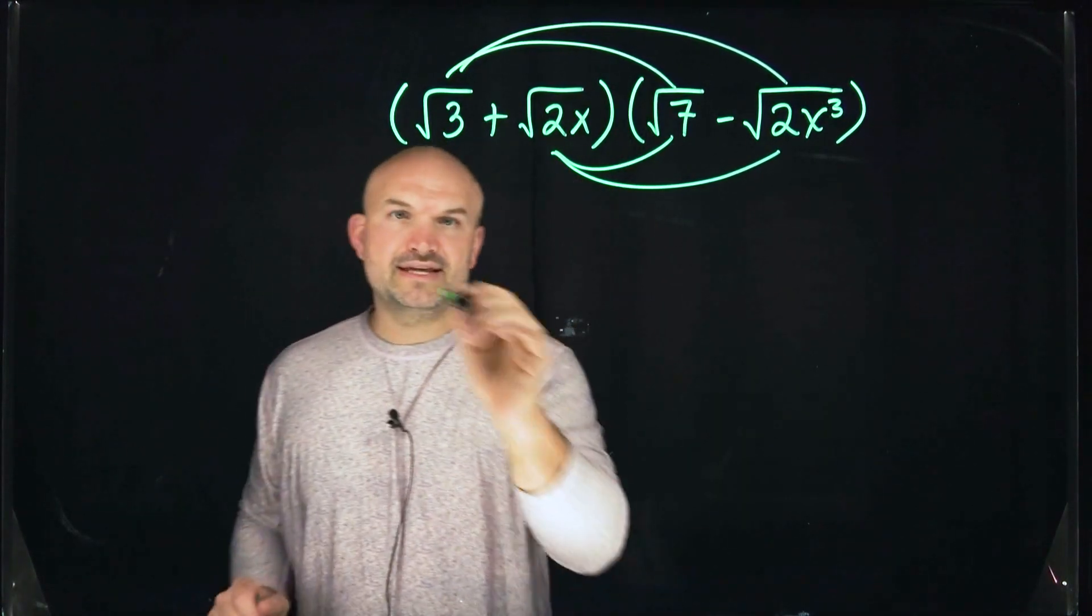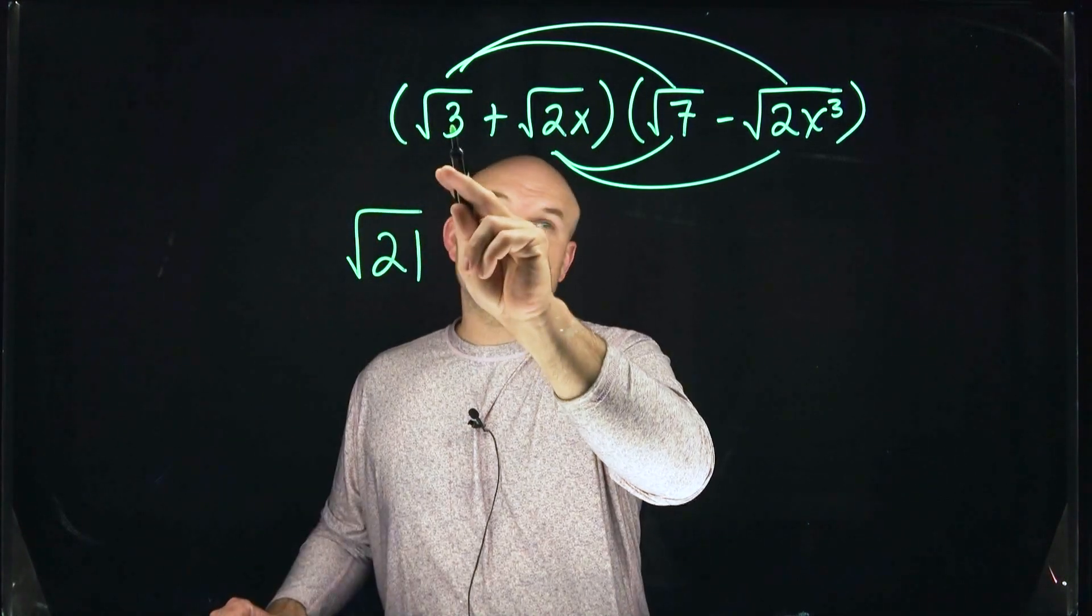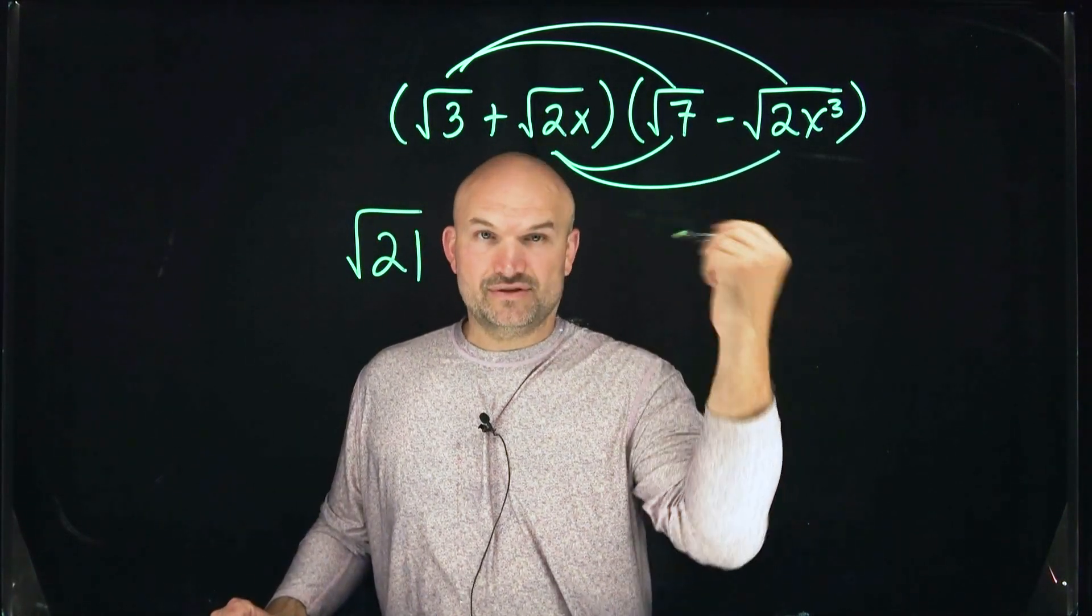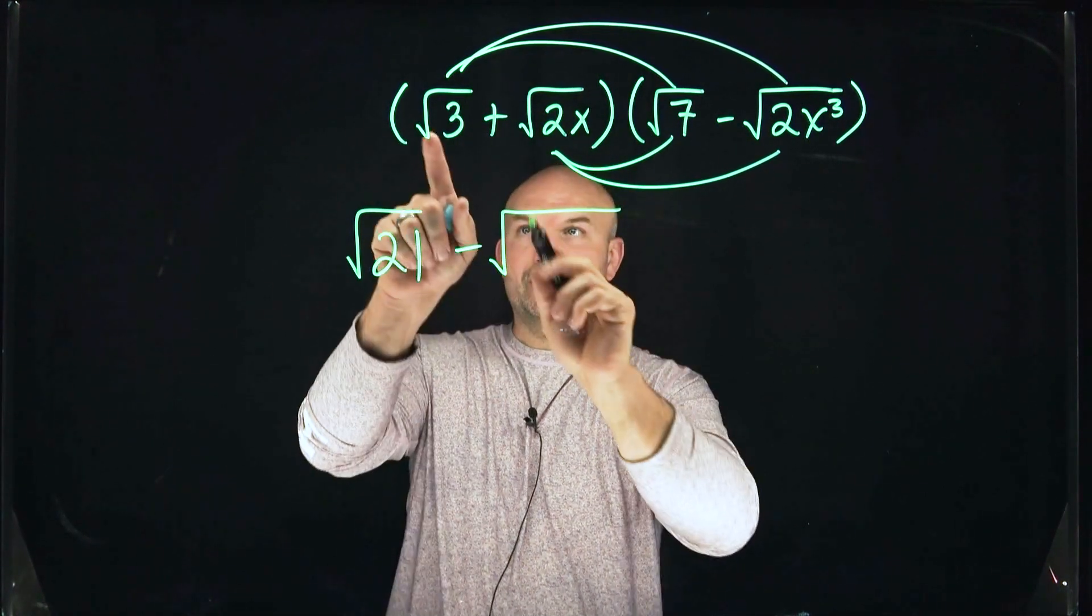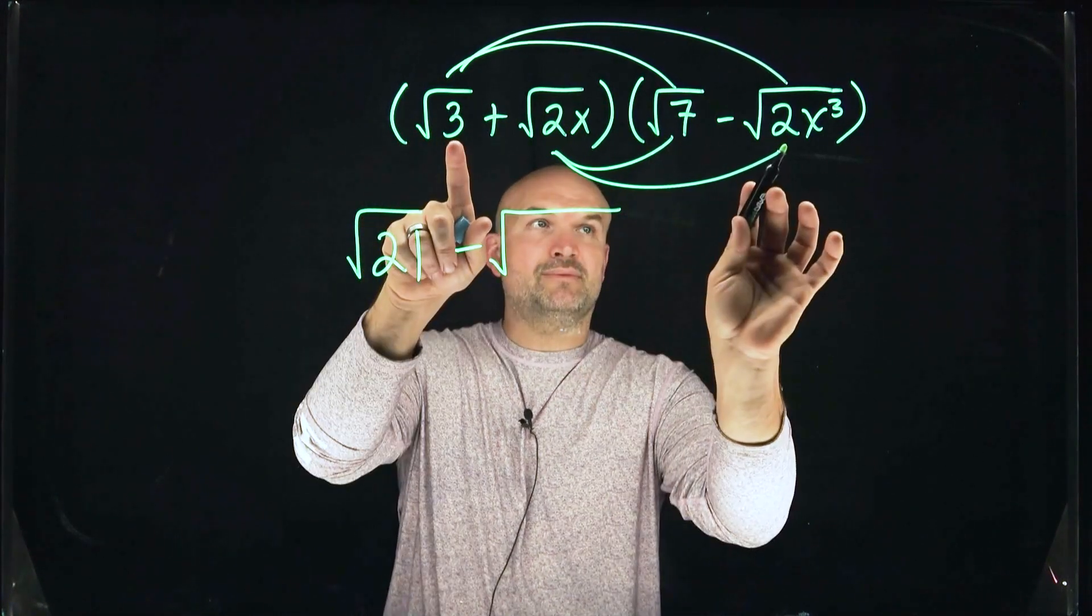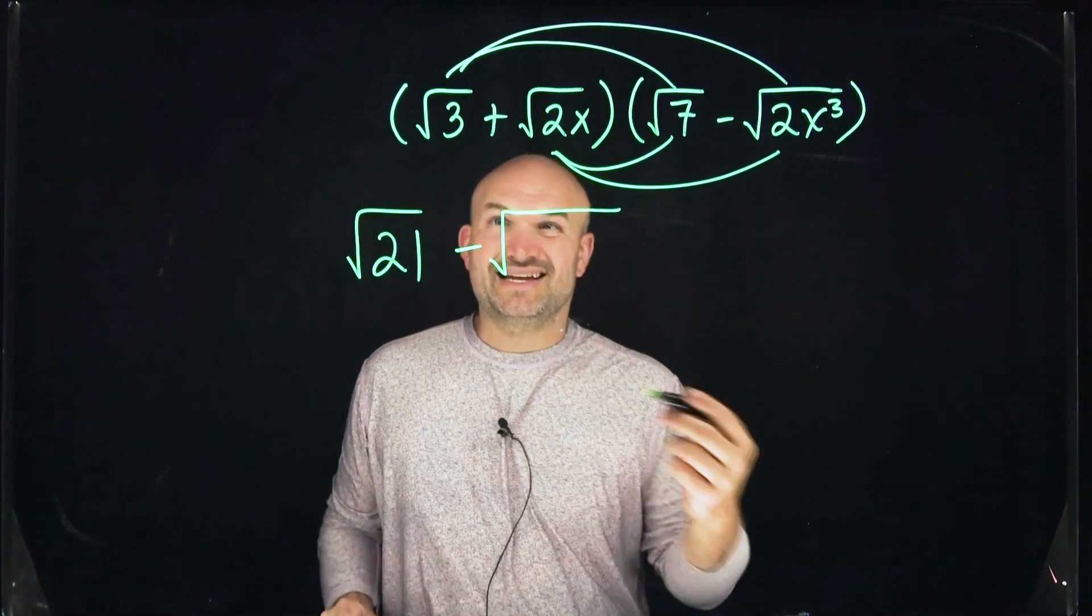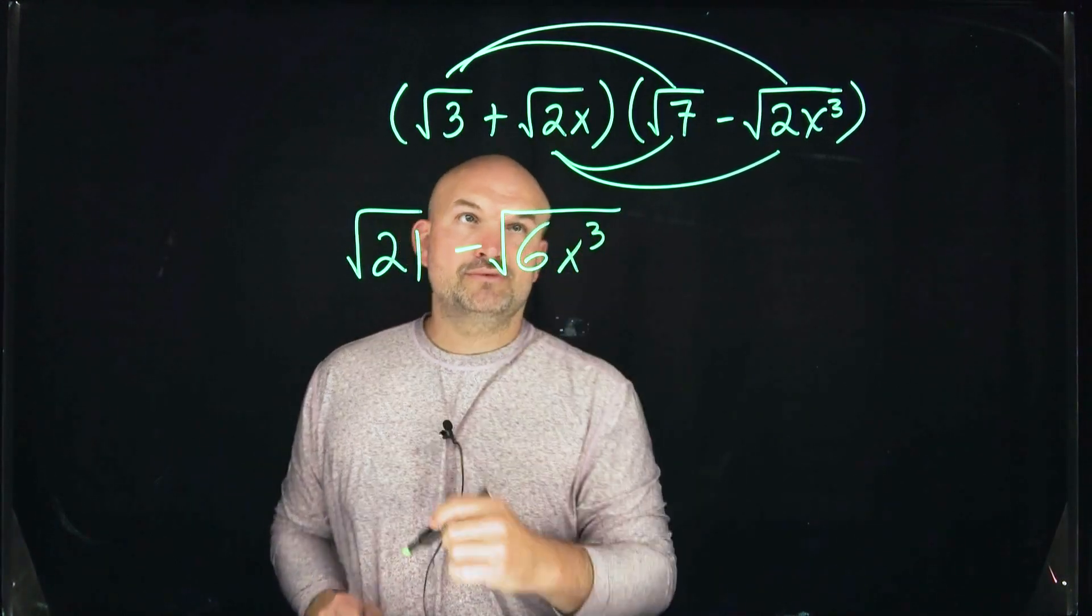So square root of three times square root of seven, that's going to be a square root of 21, a positive square root of three times a negative. So therefore, that's going to be a negative square root. So whatever we do, we keep the index the same, but notice that's a positive and that's a negative. So therefore, that's why it's a negative. These two are both positive. And then we're going to multiply a three times a two x cubed. Again, you can only multiply the three times a two. So that's going to be a six x cubed.